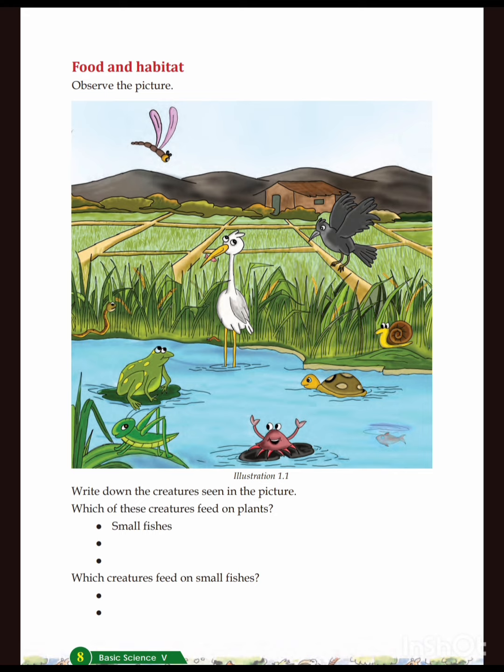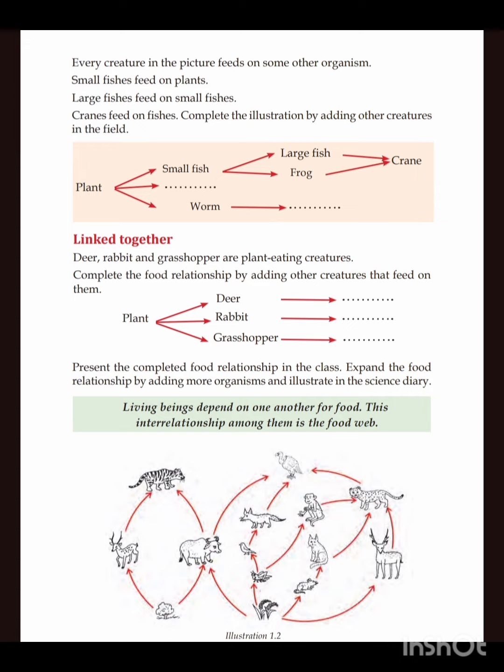Which creatures feed on small fishes? Crane? Crow? Frog? These are the creatures that feed on small fishes. Every creature in the picture feeds on some other organism. Small fishes feed on plants. Large fishes feed on small fishes. Crane feeds on fishes.